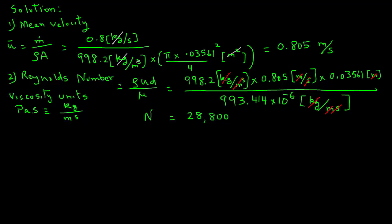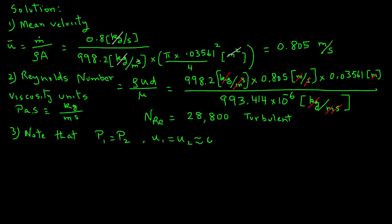A Reynolds number of 28,800 indicates turbulent flow, since any Reynolds number greater than 4,000 means turbulent flow. From the system diagram, both tanks are open to atmosphere, so pressure at location 1 equals pressure at location 2. Also, since the tanks are large in diameter, the velocity at locations 1 and 2 is assumed to be zero.